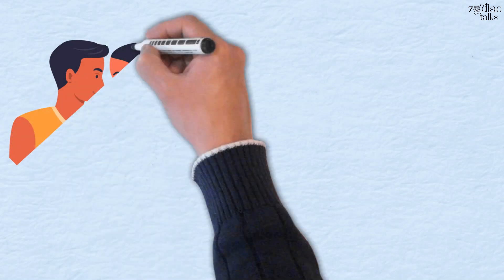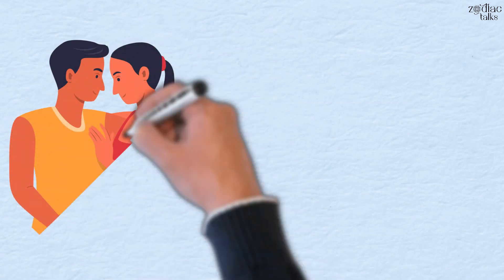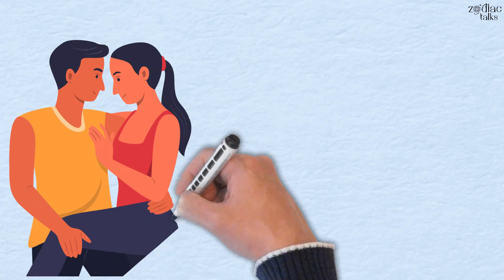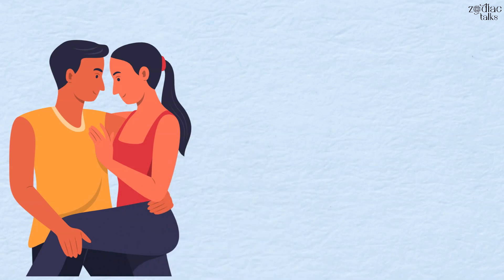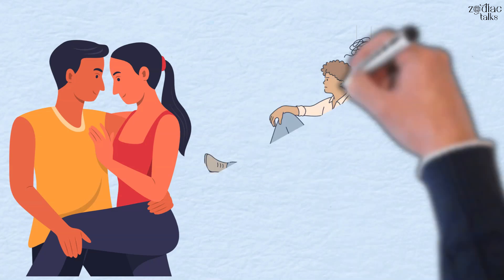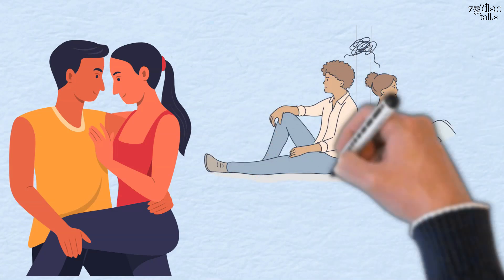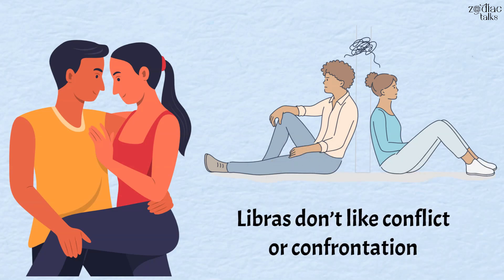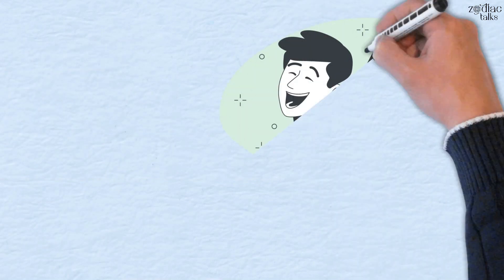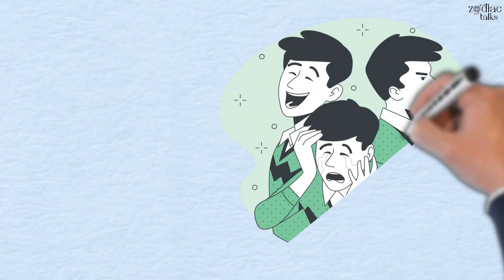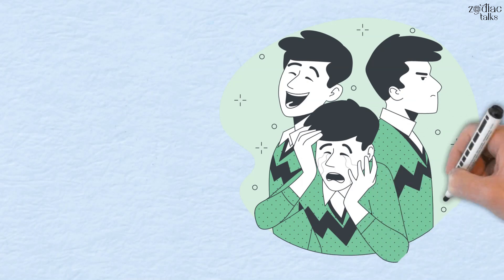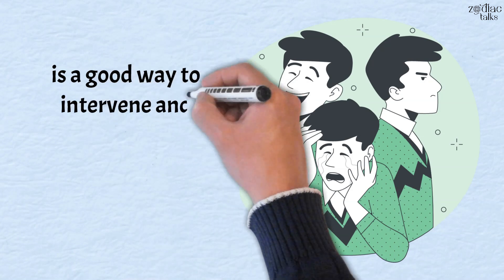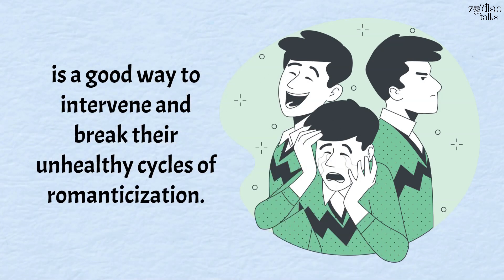They'll find a potential partner and be with them for some time, but then reality sets in, and the romantic expectations that Libra had fall to the wayside. Libra will either leave the relationship or stay in a relationship that they want to leave but can't. Libras don't like conflict or confrontation, so they'll ignore their own feelings. This causes them to bottle everything up, and it's only a matter of time before that bottle breaks open. Instilling Libra with a healthy dose of reality is a good way to intervene and break their unhealthy cycles of romanticization.